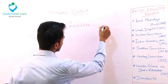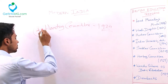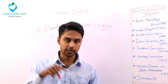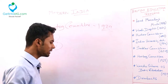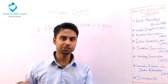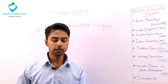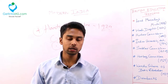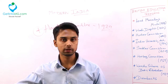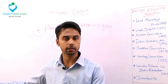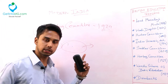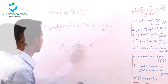Next is the Hartog Committee in the year 1929. He told that primary education should be based on vernacular languages, giving strict recommendations towards that. For secondary education, he told that only students who perform well in primary school should go to the high school and university level. If students are not performing at the primary level, they should be channelized to the vocational groups for commercial careers. Only the best-performing students should go to high school and university levels.